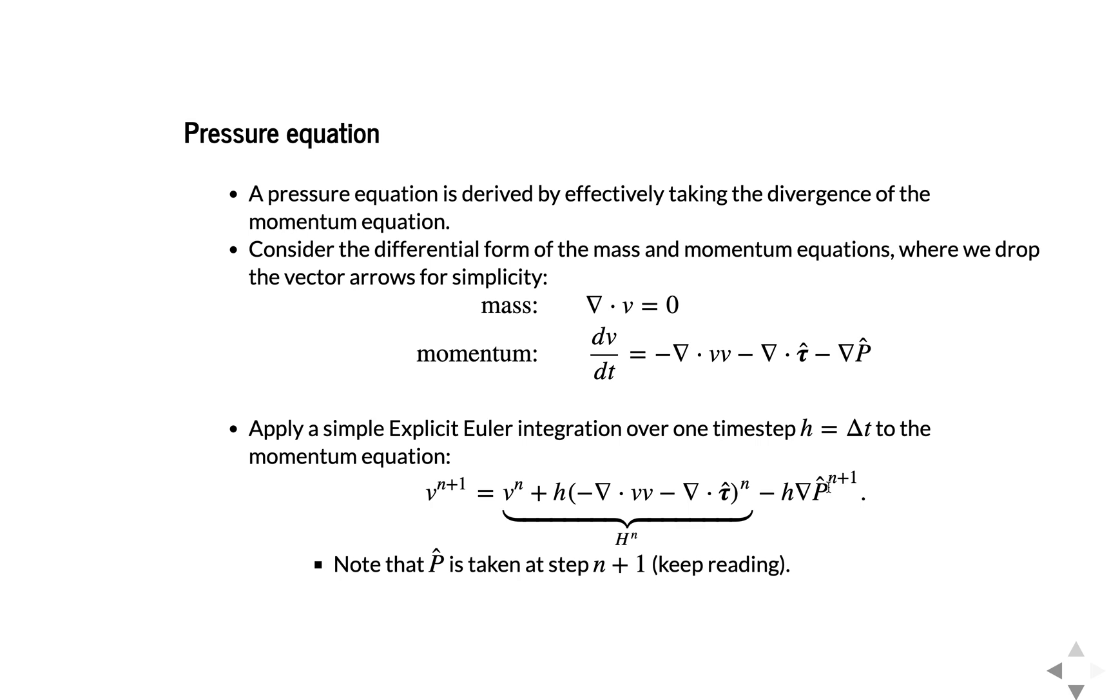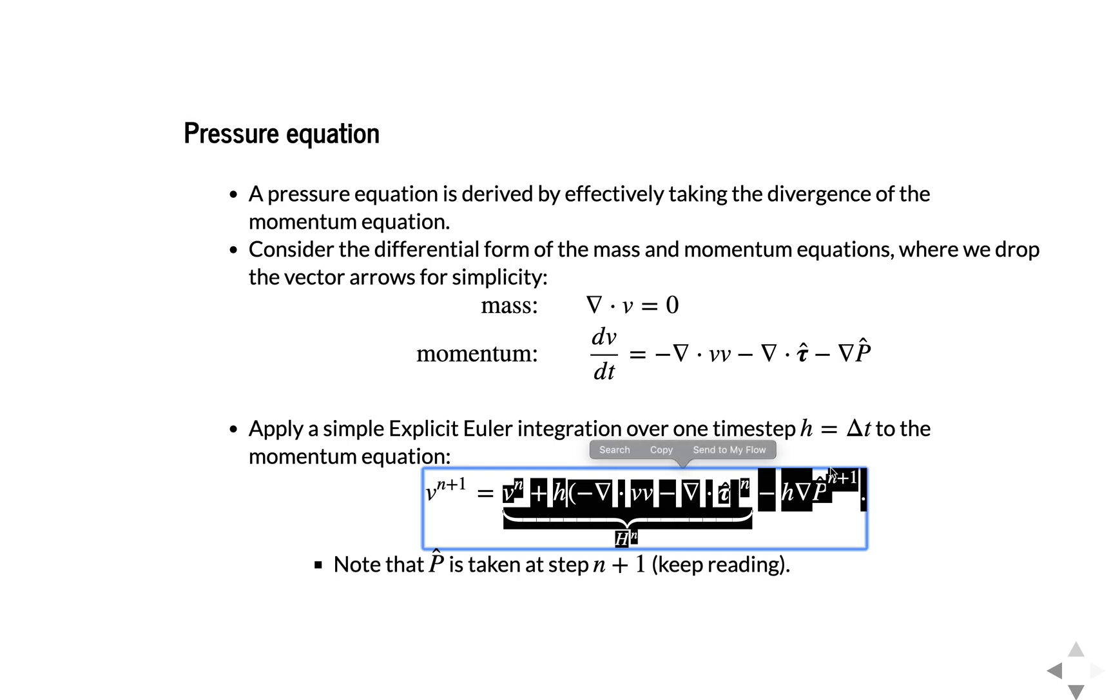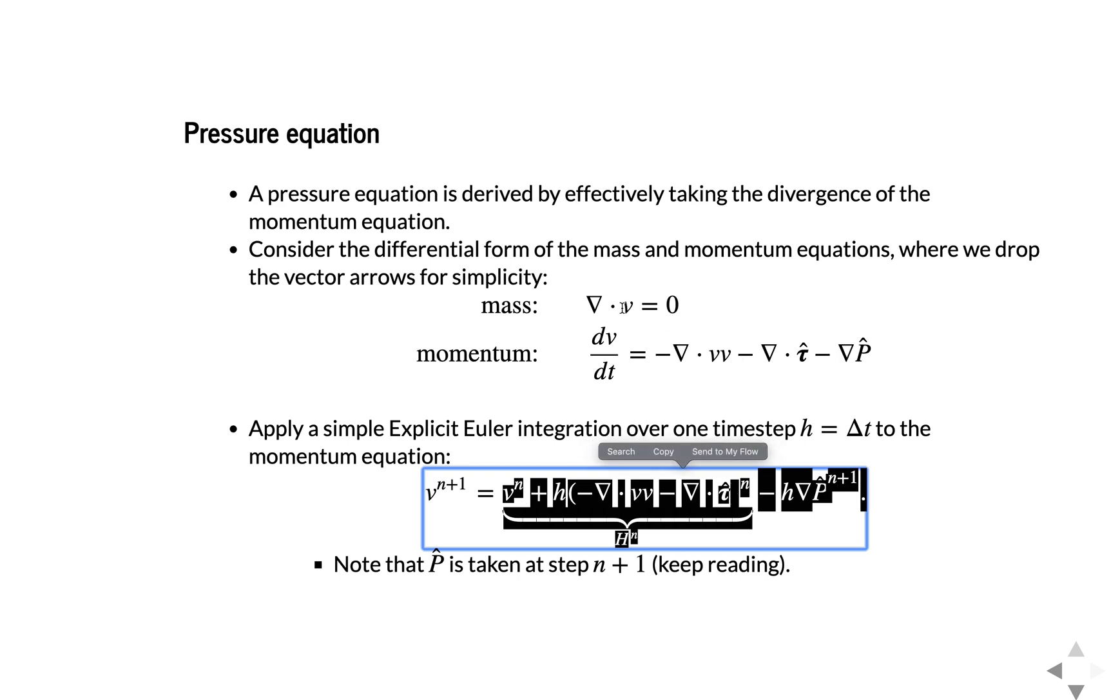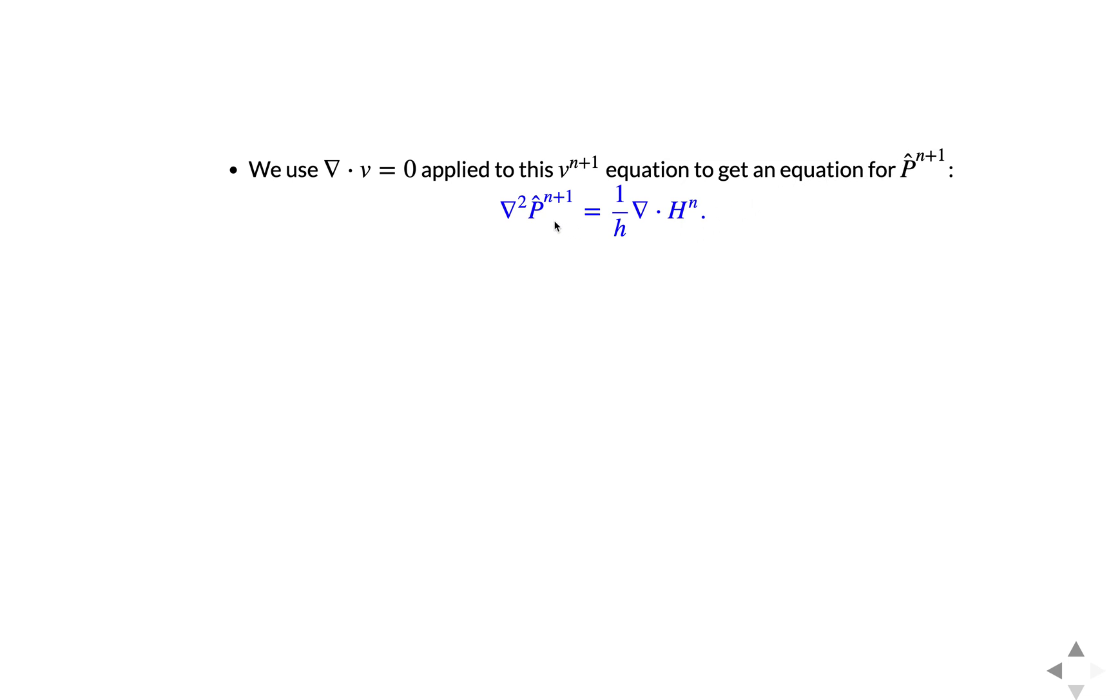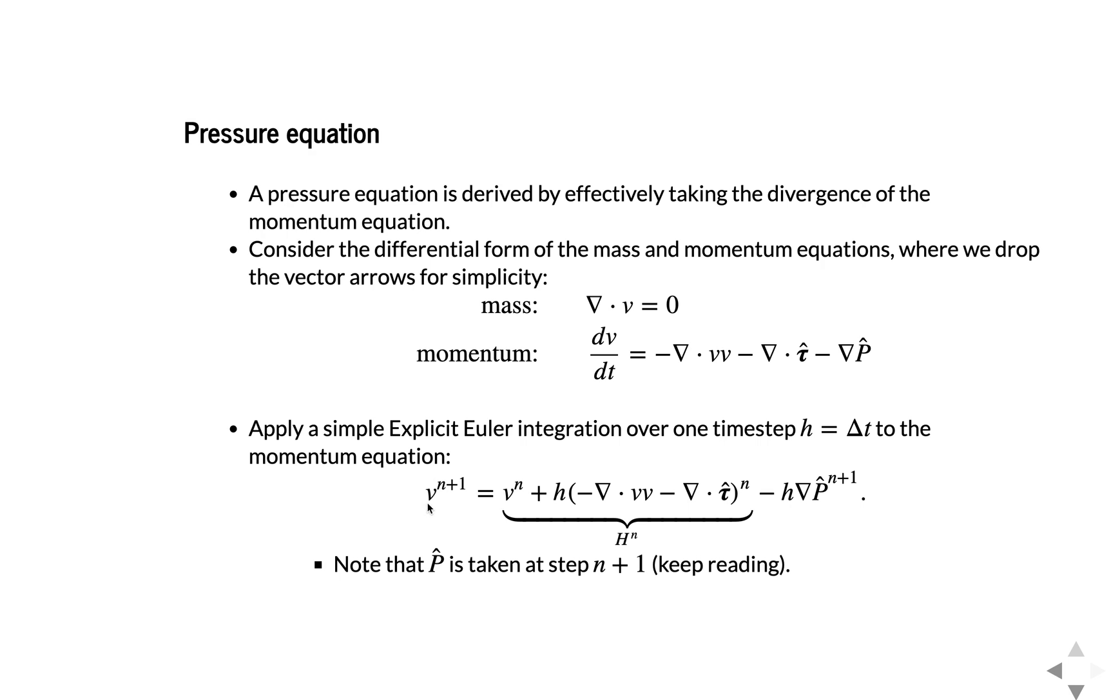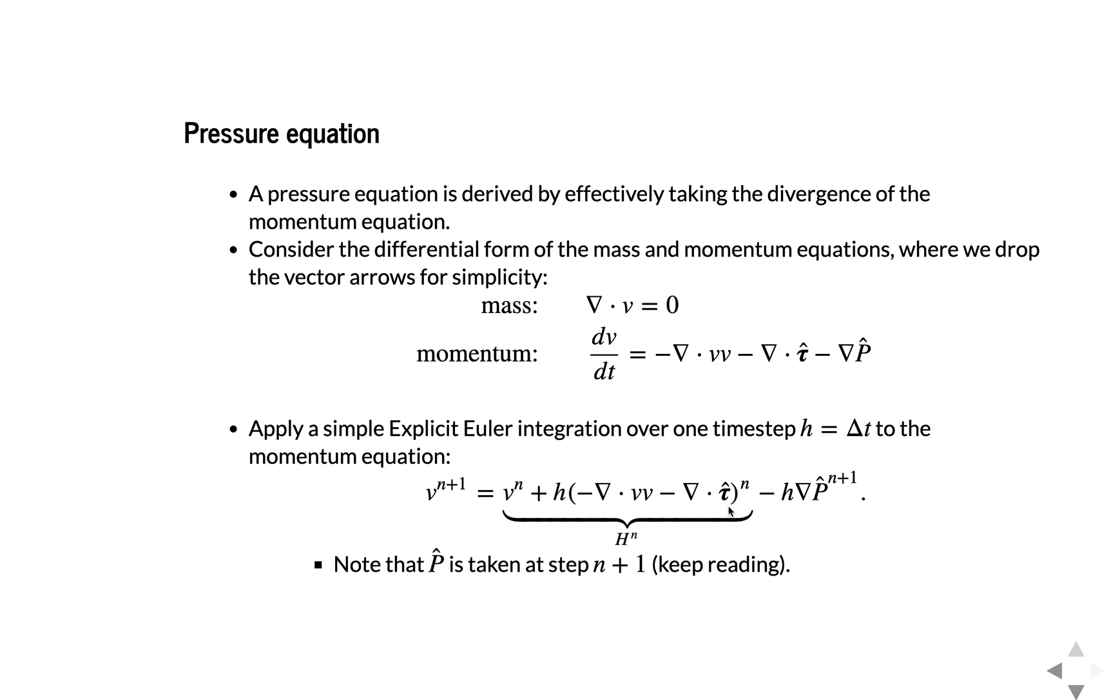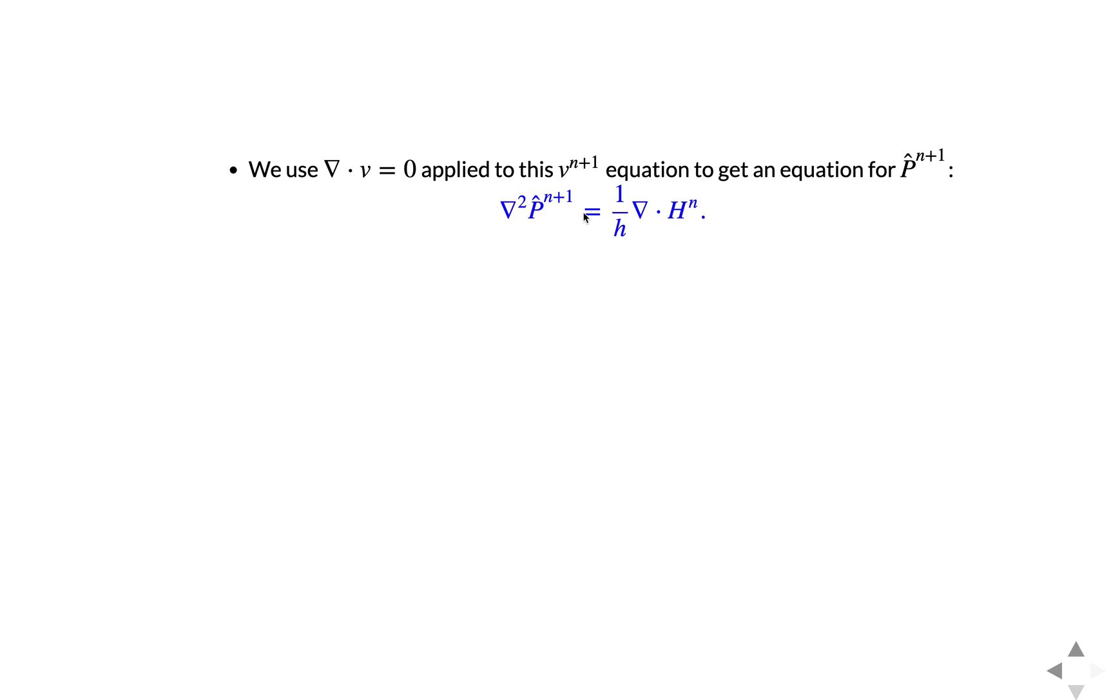And we'll note that p here is written as n plus one, but there's some details related to that. So our goal is to find an equation for pressure. And we do that by simply inserting this equation right here. We insert that into the continuity equation right there. So if you do delta v applied to that equation, then you get the following equation for p n plus one. So in other words, v n plus one equals h, big H, minus h grad p. So if you take the divergence of this, then div v should be zero, so this side becomes zero. And you've got h times delta p equals a delta h term. And that's what we have here. So that's our pressure equation. Simple as that. Much simpler than the so-called simple algorithm.